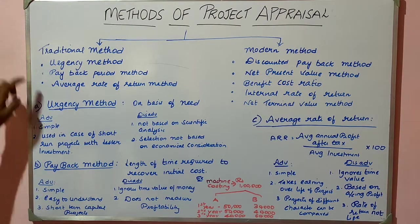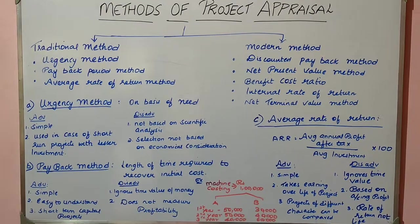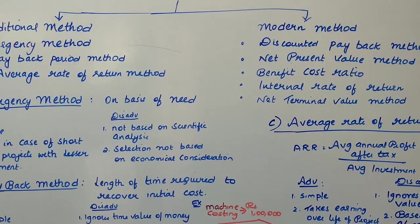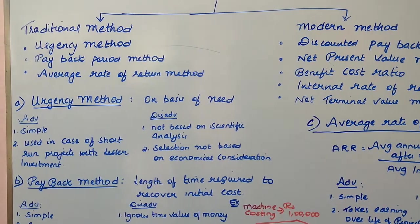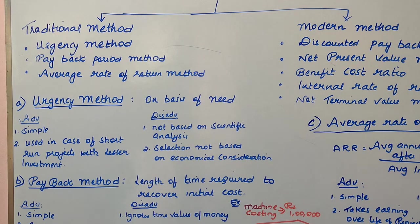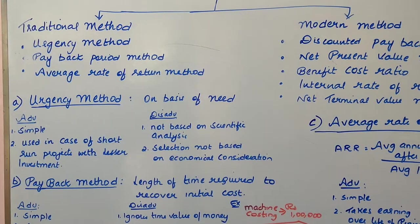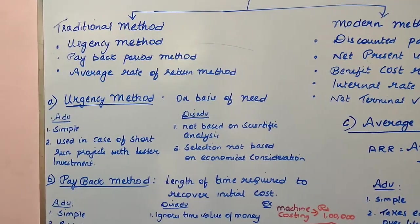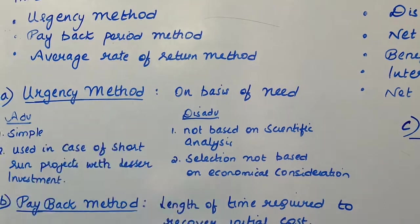Coming to the first one, that is the urgency method. The urgency method is a method where a project is selected basically on necessity — on the basis of requirement, on the basis of need. If a project is selected on that basis, it is generally termed as the urgency method. Those projects which cannot be postponed and those projects which are highly needed will be selected under the urgency method.